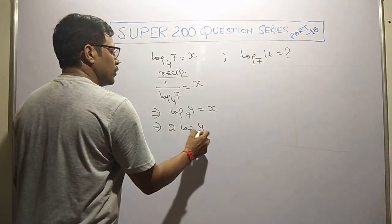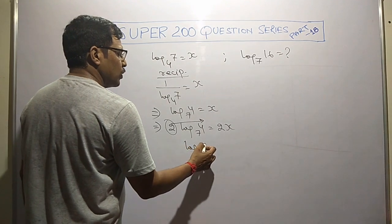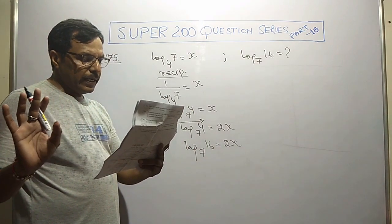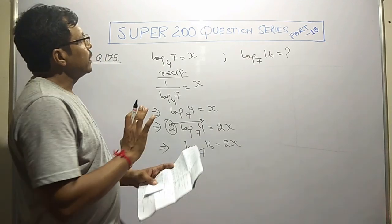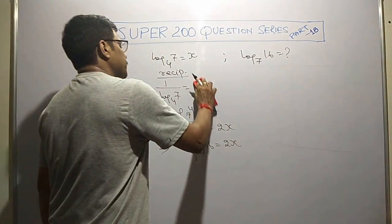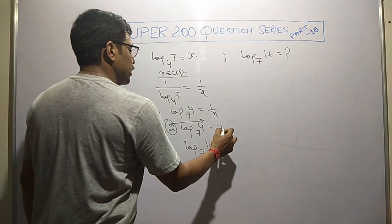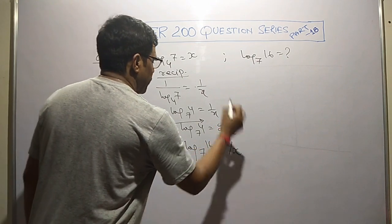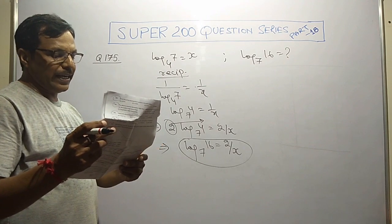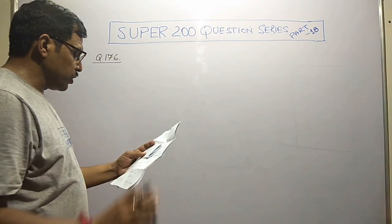Log 7 to base 4 equals x implies log 4 to base 7 equals 1/x. Multiplying both sides by 2 and transferring this 2 to power of 4, we get log 16 to base 7 equals 2 by x, which is shown in option A.